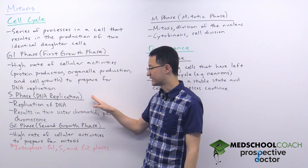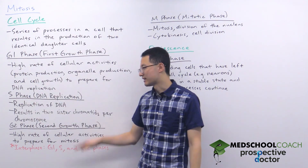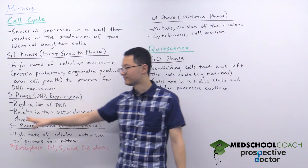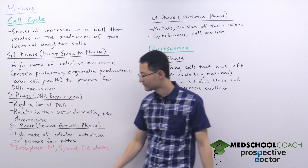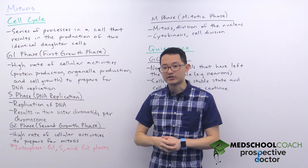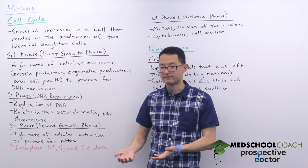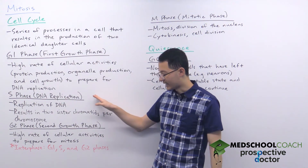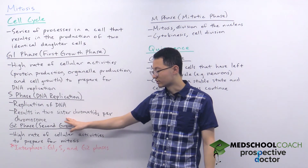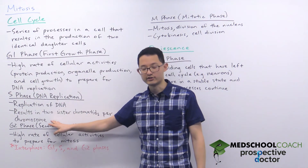DNA replication is the next phase called the S phase, sometimes also called DNA synthesis. As we know, DNA replication is going to result in two identical copies of DNA. So after the S phase is complete you will have two sister chromatids that are identical for each chromosome.